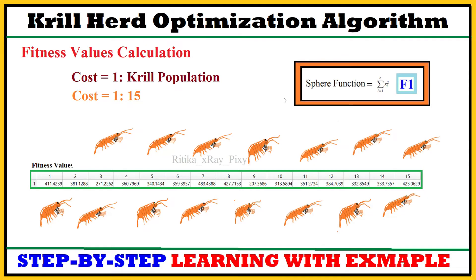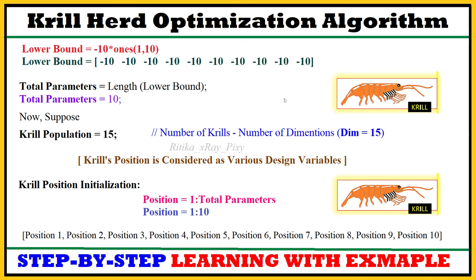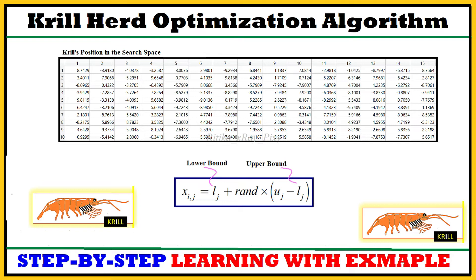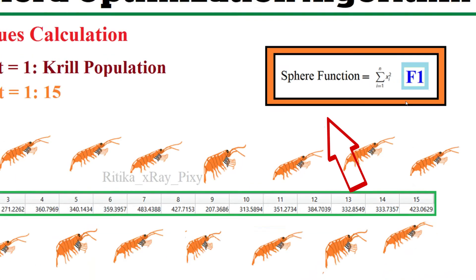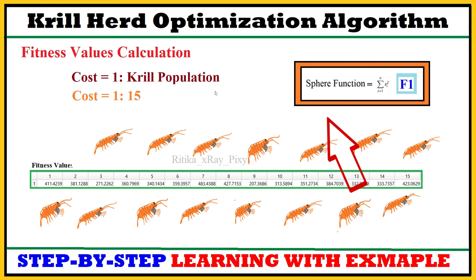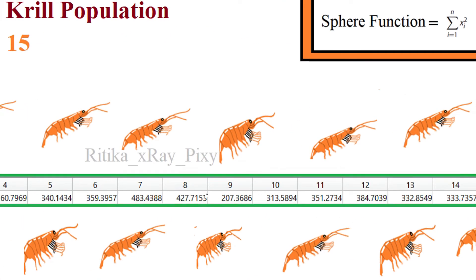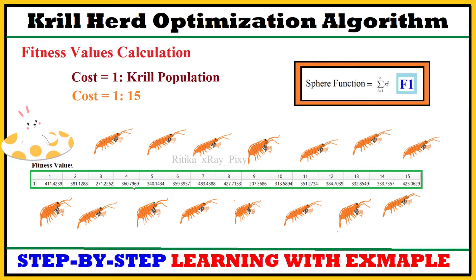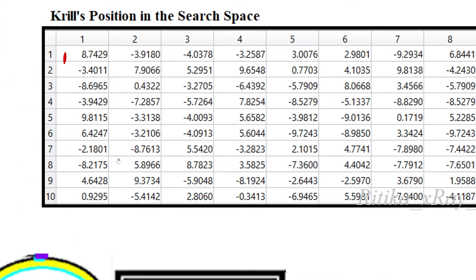Now, using any cost function, we will calculate the fitness values — or objective function values — for each krill. Since the krill's position is considered as the number of dimensions or design variables, we are using the sphere function here to calculate the cost or fitness value for the krills.